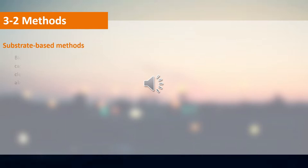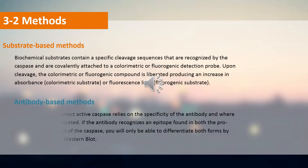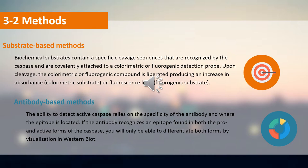Antibody-based methods rely on the specificity of the antibody and where the epitope is located. If the antibody recognizes an epitope found in both the pro- and active forms of the caspase, you will only be able to differentiate both forms by visualization in western blot. Substrate-based methods use biochemical substrates containing a specific cleavage sequence recognized by the caspase, covalently attached to a colorimetric or fluorogenic detection probe. Upon cleavage by the cognate caspase, the colorimetric or fluorogenic compound is liberated, producing an increase in absorbance or fluorescence.